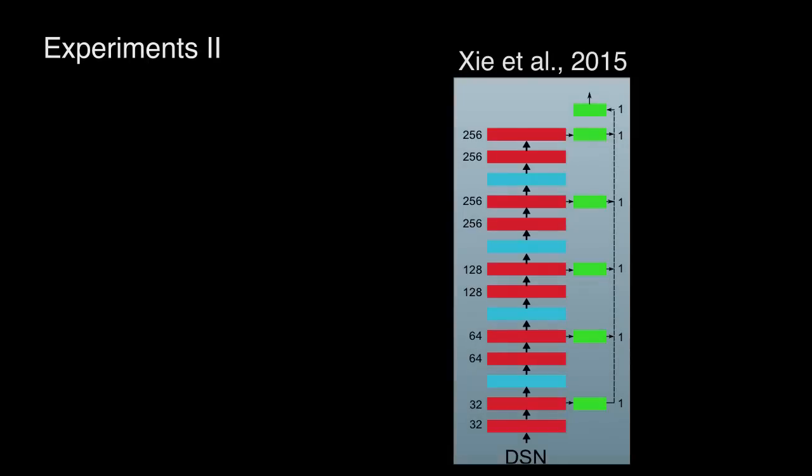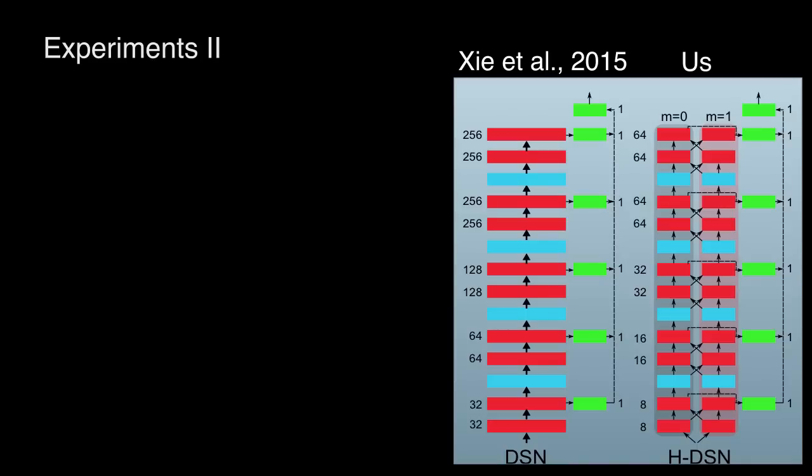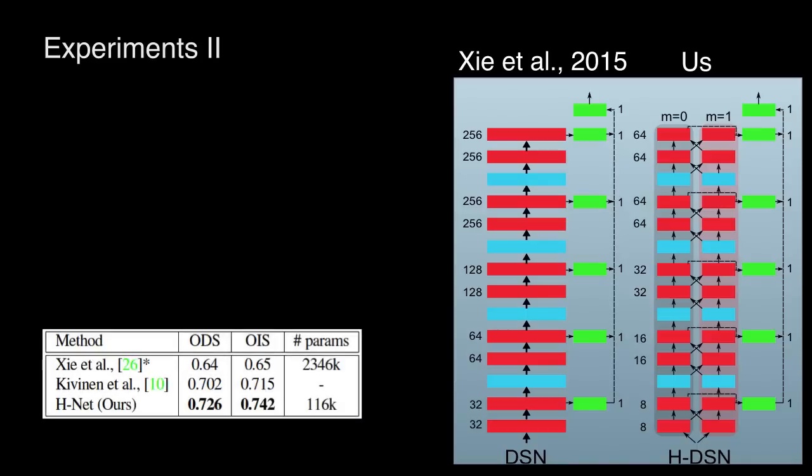Our second task was boundary detection. State of the art models rely on pre-trained networks but we wanted to compare in the absence of transfer learning. We compared matched architectures on the Berkeley segmentation dataset 500 outperforming our competition while scratch training on just 5% of the model parameters.